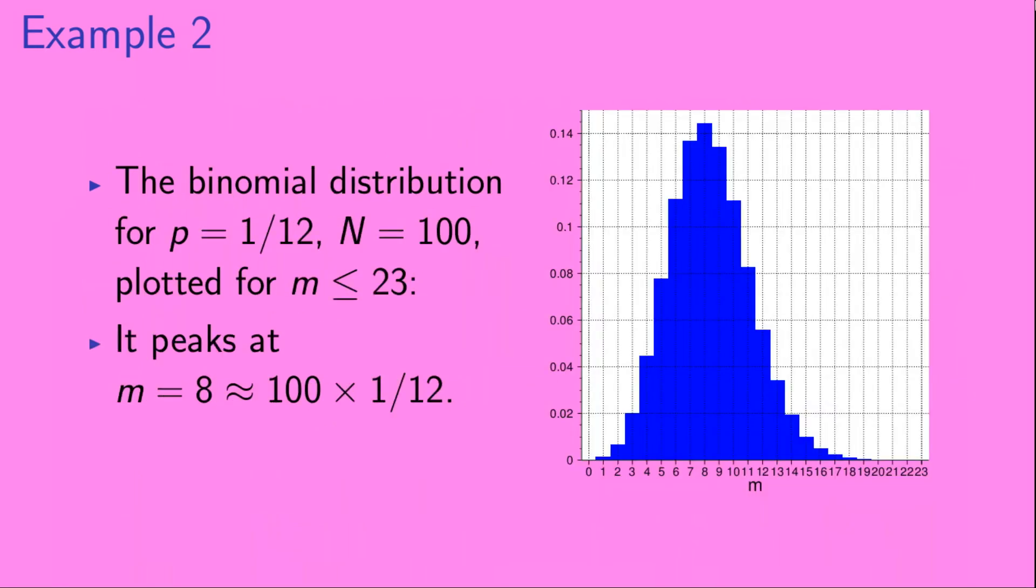Here we show the binomial distribution for p equals 1 twelfth, n equals 100, plotted for m up to 23. It peaks at m equals 8, which is about 100 times 1 twelfth, or 8 and a third. We can see that the probability for there to be 8 red cars in the parking lot is just over 14%.